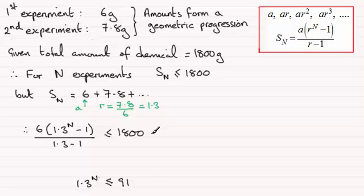This is 0.3 in the denominator. If I divide 0.3 into the 6, you'll find it goes 20 times. So what we've got then is 20 times 1.3 to the power N minus 1 must be less than or equal to 1,800.